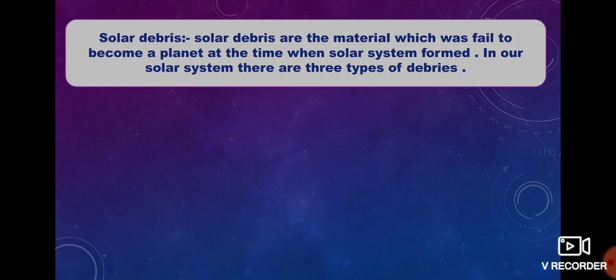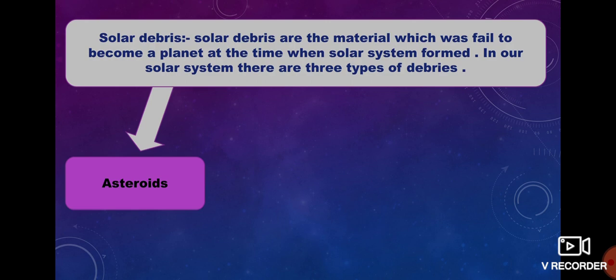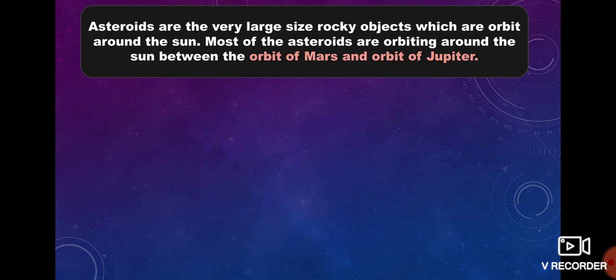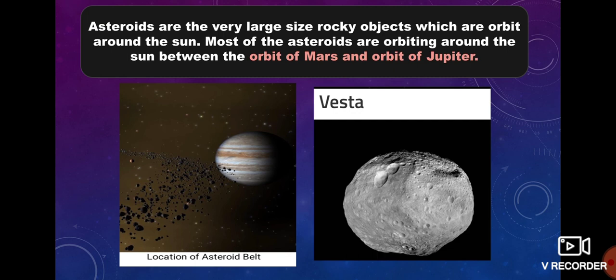Solar debris are the materials which failed to become a planet at the time the solar system formed. In our solar system there are three types of debris: first, asteroids; second, meteoroids; and third, comets. Asteroids are very large rocky objects which orbit around the Sun. Most asteroids orbit the Sun between the orbit of Mars and Jupiter, in a region also known as the asteroid belt.